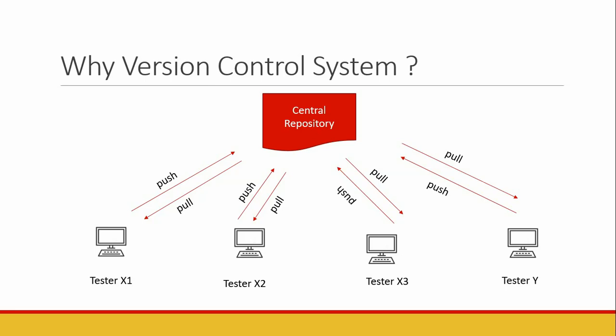Another advantage, beyond better code sharing, is that if the current build is failing, you can revert back to a previous working version that is available in the repository. These are the key advantages that version control systems provide. There are two popular version control systems we will discuss: Git and GitHub.